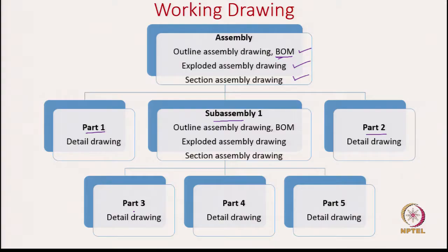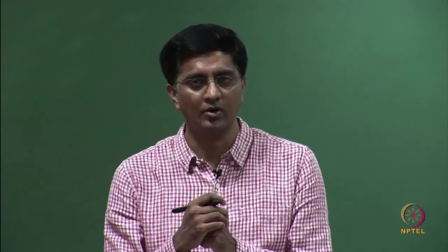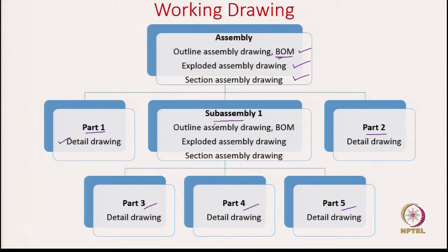Let us say subassembly 1 is again composed of parts 3, 4, and 5. You will notice that the detailed drawings are only with the parts — each part has a detailed drawing where actual dimensions and multi-views are shown so that shape and size are depicted. When we come to the subassembly and assembly level, we are only looking at how these parts come together and perform the operation of the design.